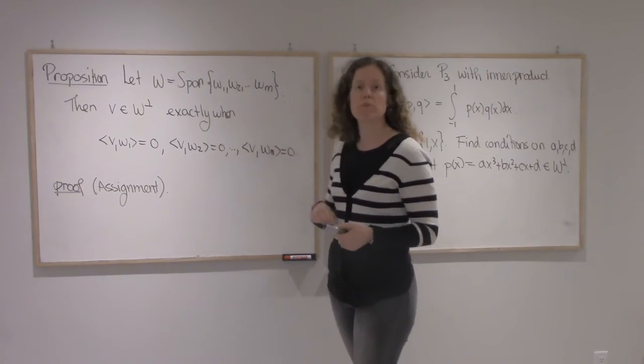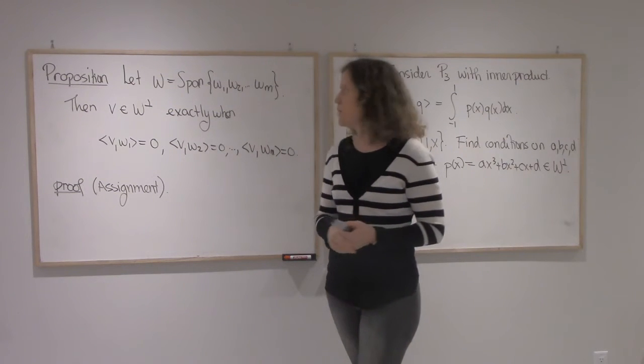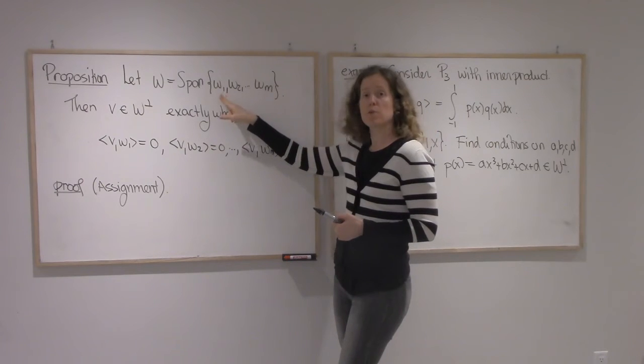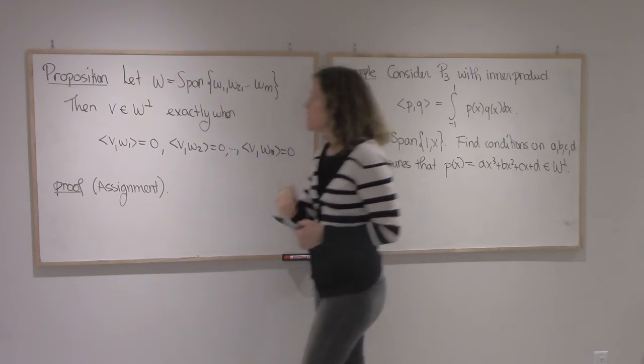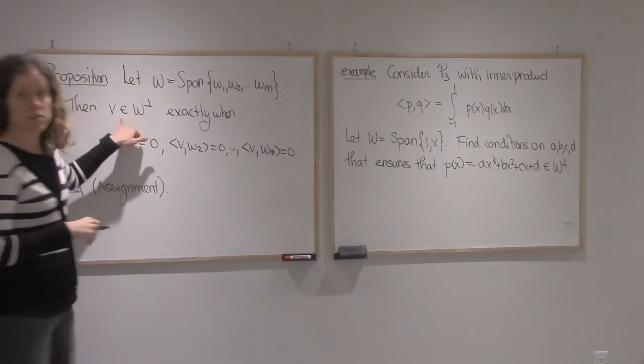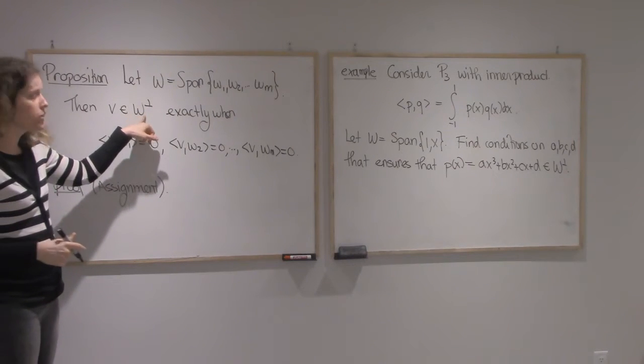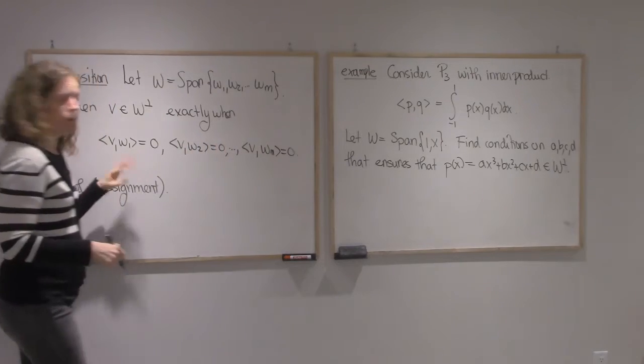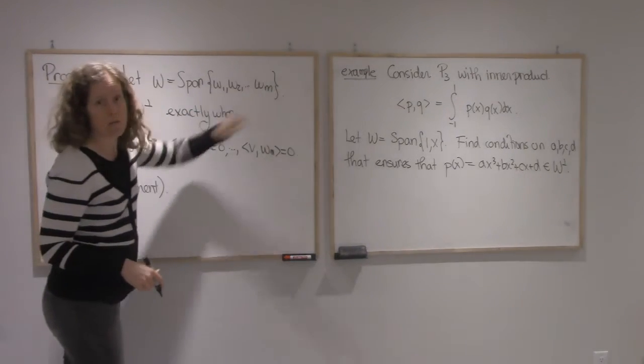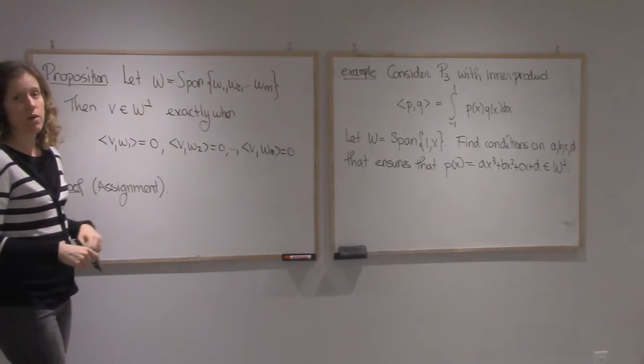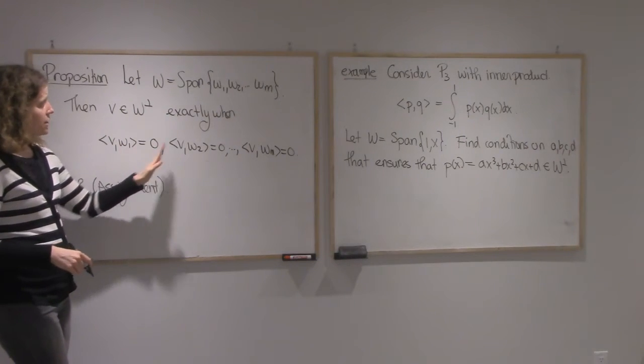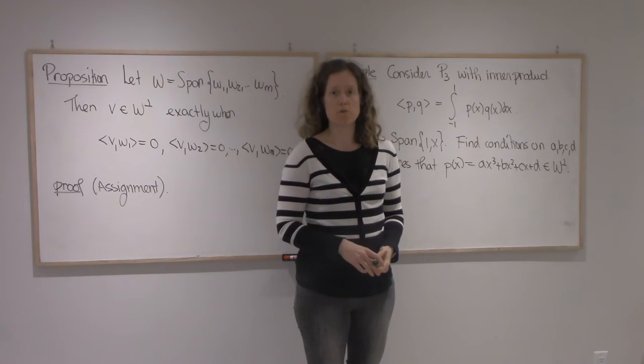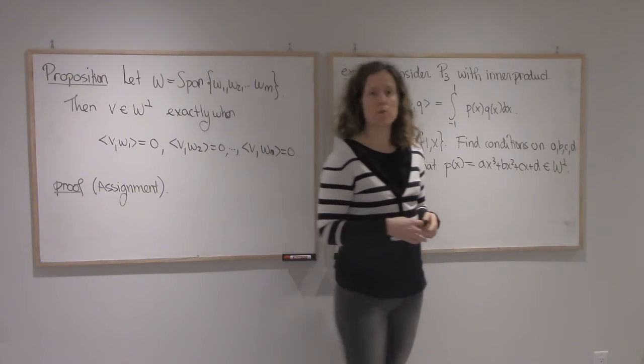For that I'll use this proposition which you'll prove on the next assignment. If W is spanned by these vectors W1, W2, Wm, then an element of V would be in the orthogonal complement of W exactly when the inner product of V with all the generating elements will give you 0. So you only need to check that V is orthogonal to these elements. You don't need to consider all elements of W, which really shrinks your work.